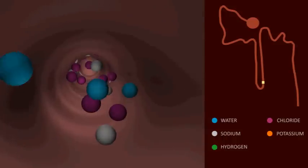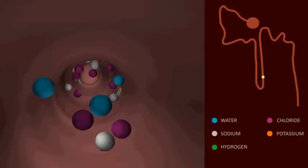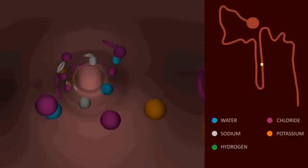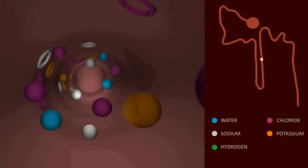The descending limb of the loop of Henley has a relatively low permeability to sodium but a high permeability to water due to the presence of aquaporin 1 channels. In the ascending limb,